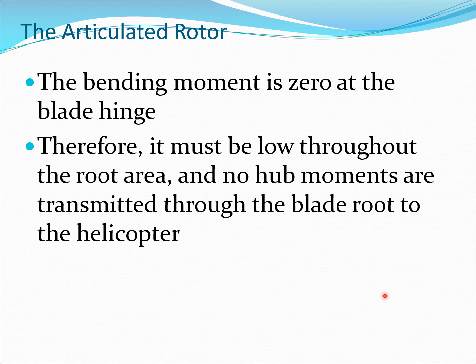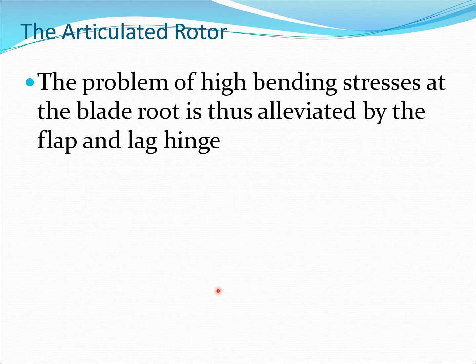The bending moment is zero at the blade hinge, and in the vicinity of this zero point the moments are also low throughout the root region of the blade. If the flap hinge is at the root, hub moments are not transmitted to the helicopter. In practice the hinge is placed at some offset from the hub so that some moments are transferred, providing some level of control capability on the body through the main rotor.